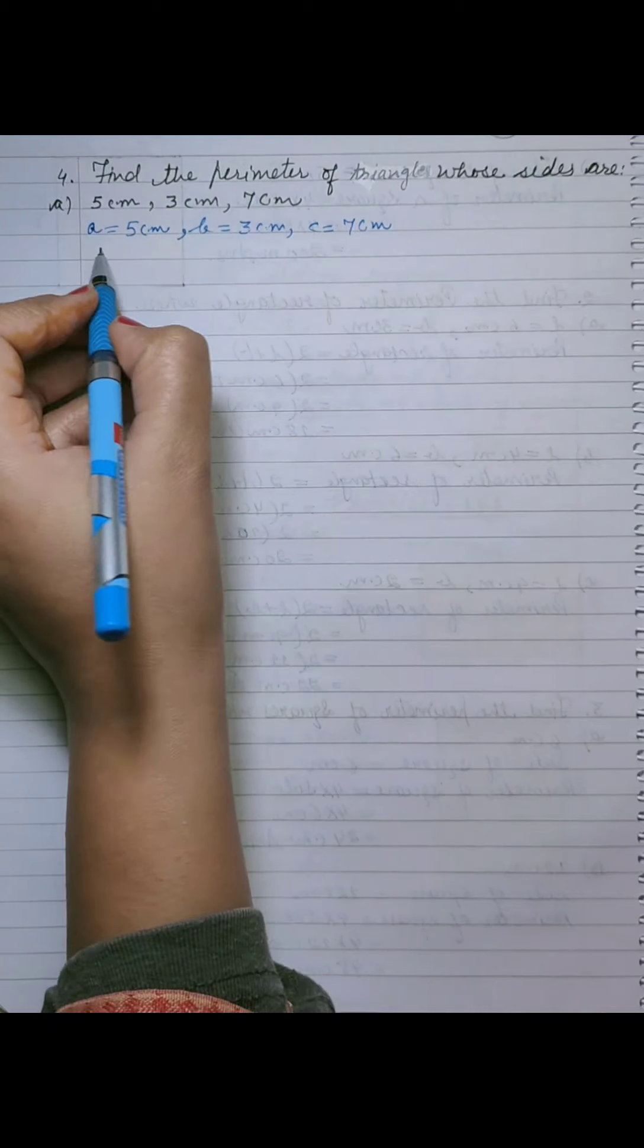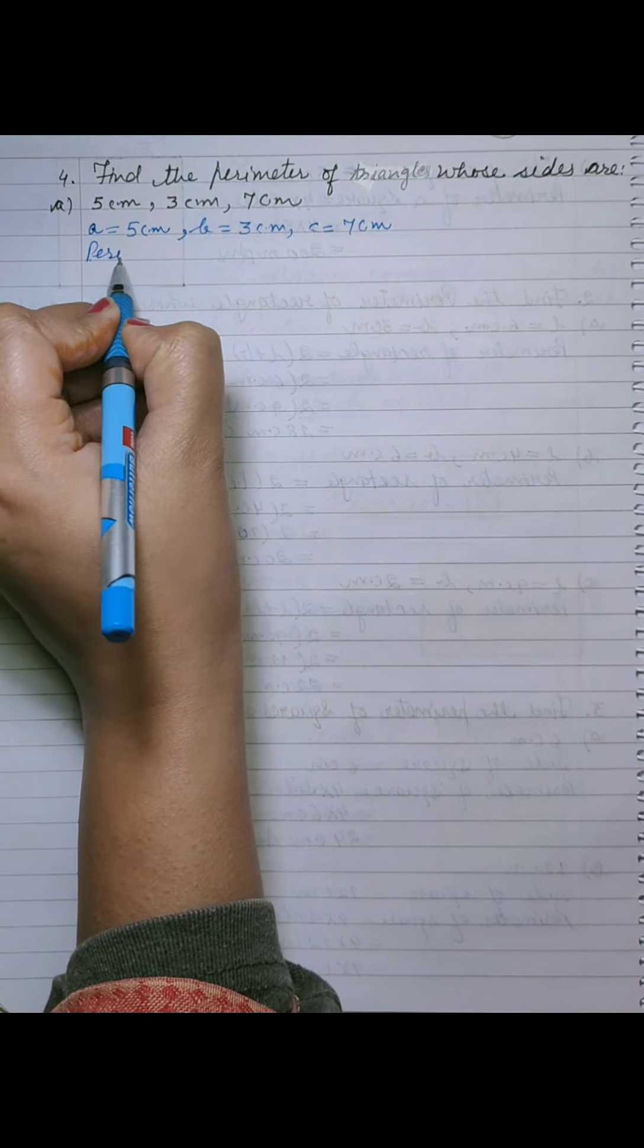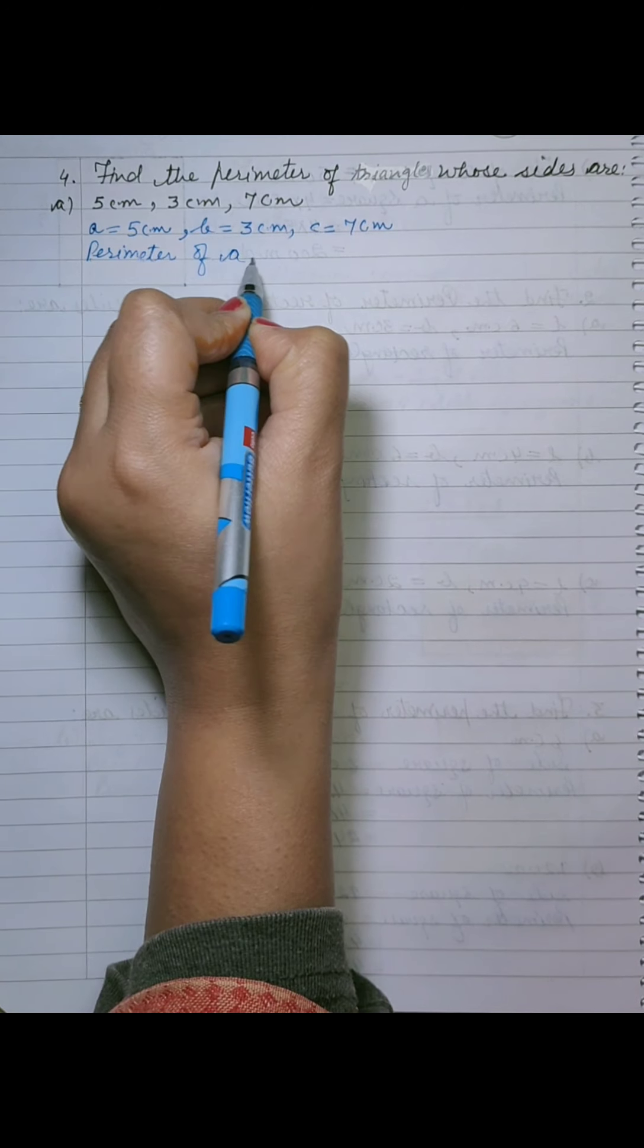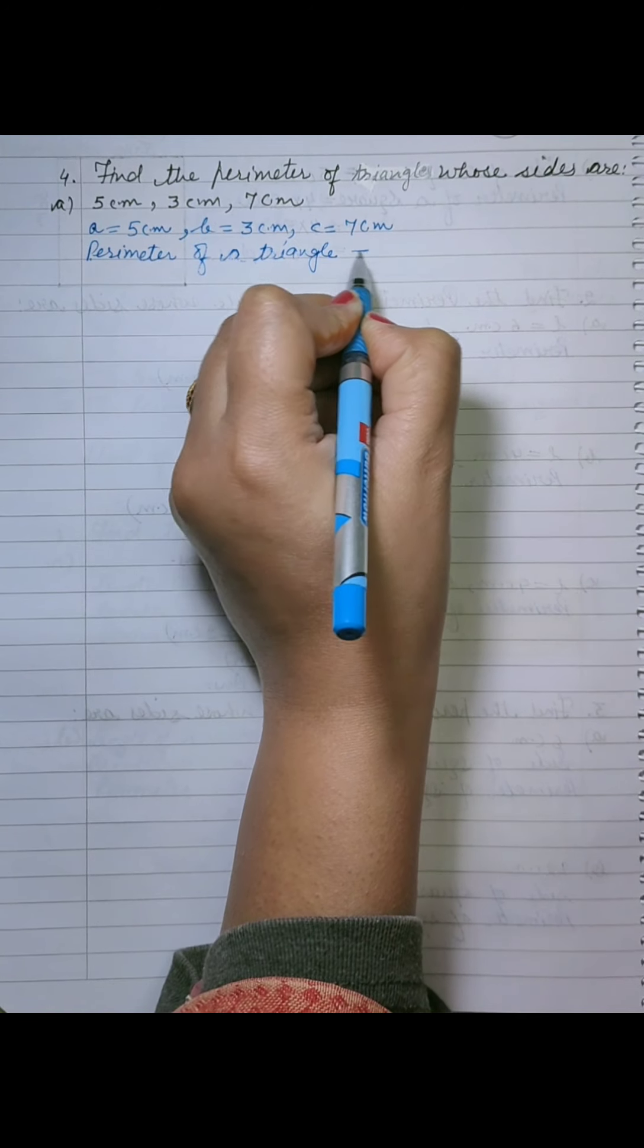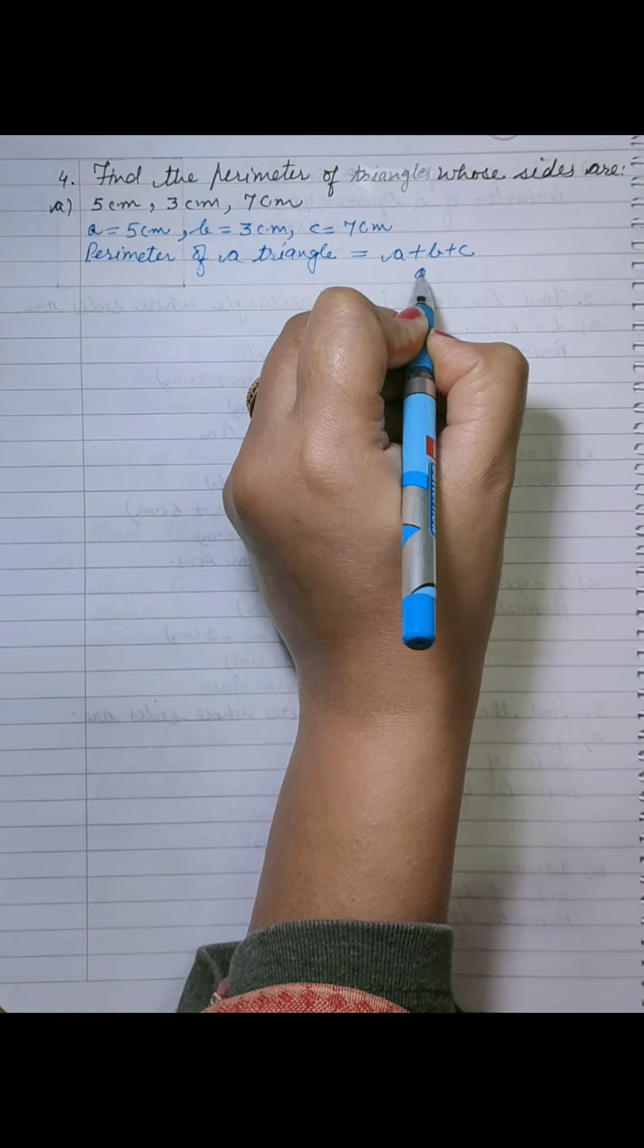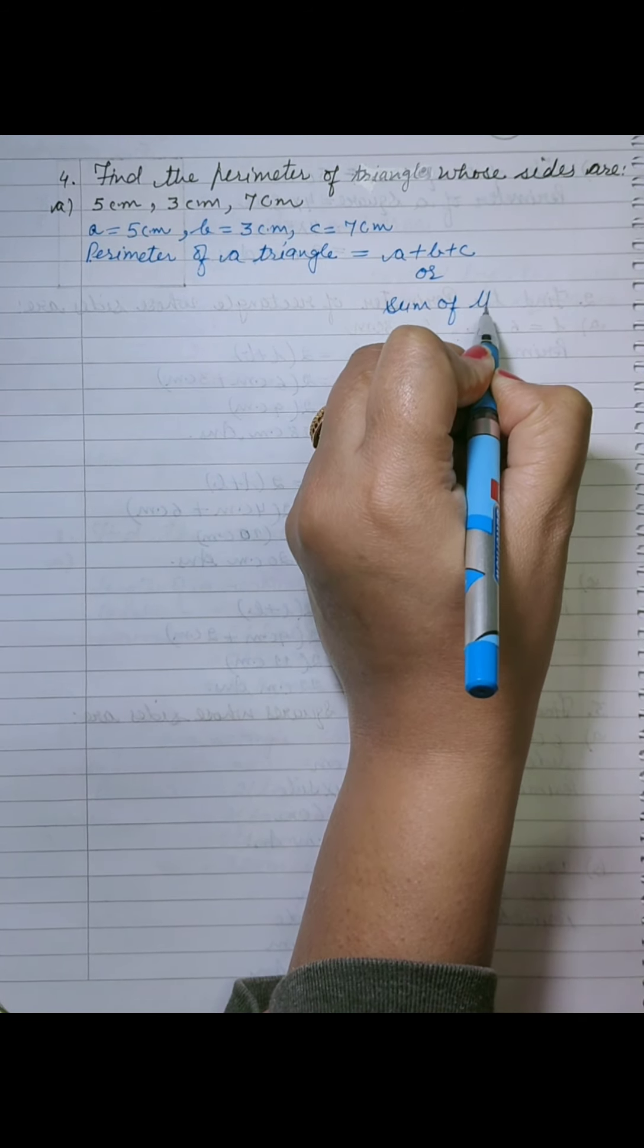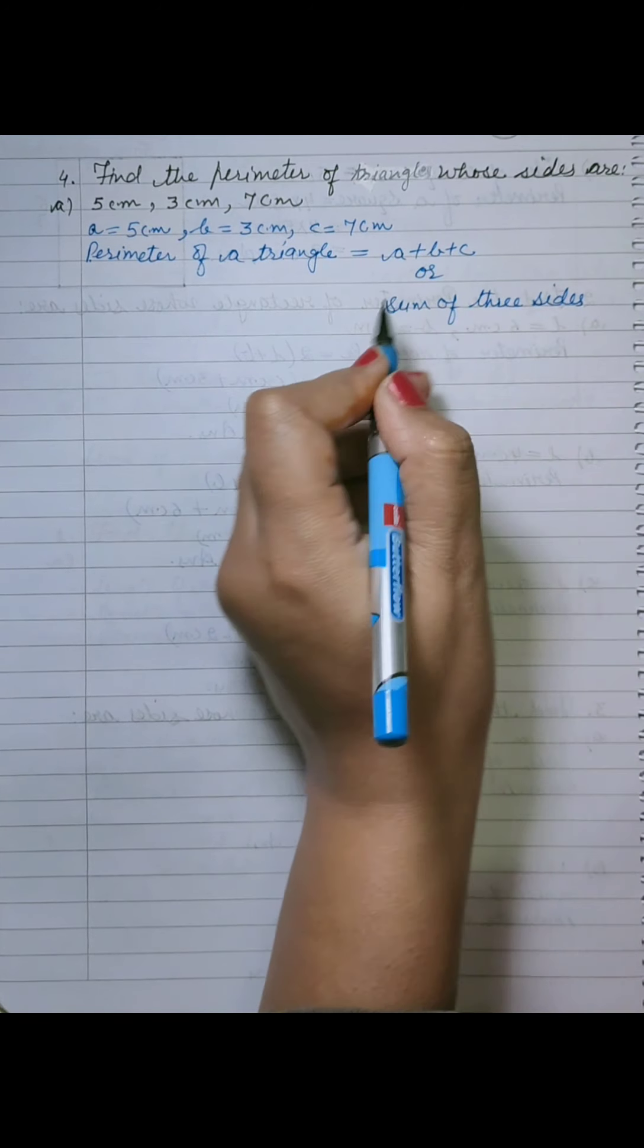So, then, perimeter of a triangle. Triangle ka perimeter ka formula hota hai A plus B plus C or sum of 3 sides. So, 3 sides ko add karna hai, ya A plus B plus C.